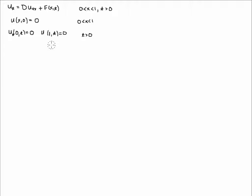Hello students. In this problem we're going to use something called Duhamel's Principle to solve a non-homogeneous PDE. What makes this PDE non-homogeneous is this term here, the f(x,t). We have the heat equation and we're adding either a heat source or a heat sink. If f is positive then you're adding heat; if f is negative then you're taking away heat.